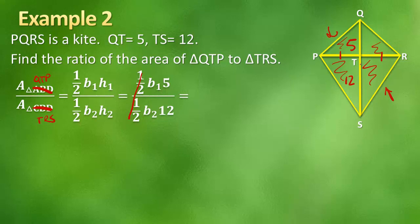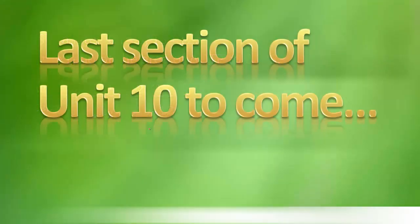So we can cancel out the bases too, which is just going to leave us with 5 over 12. No squaring or anything else needed, because it's unnecessary.